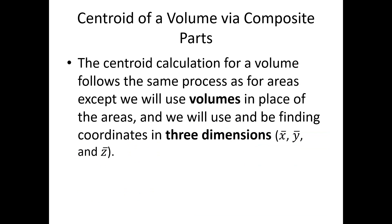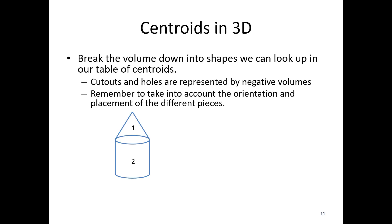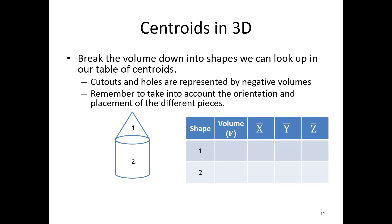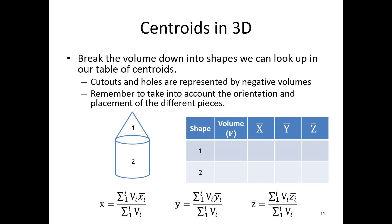For a volume, the centroid calculations follow the same process, except we use volumes in place of areas and find three coordinates: x bar, y bar, and z bar for each individual piece and overall. For example, with a cone on top of a cylinder, we need the volume for the cone and the cylinder, plus x bar, y bar, and z bar for each. It's a bit more difficult to visualize in 3D, but the calculation is the same: volume one times x bar one plus volume two times x bar two over the total volume — repeated for y and z — giving the overall 3D centroid location.